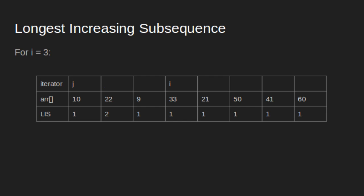For i equal to 3, is 33 greater than 10? Yes. So LIS of i becomes LIS of j plus 1, that is 1 plus 1 equal to 2. Is 33 greater than 22? Yes. So LIS of i becomes LIS of j plus 1, that is 2 plus 1 equal to 3. Is 33 greater than 9? Yes. So LIS of i becomes LIS of j plus 1, that is 1 plus 1 equal to 2. Maximum of 2 and 3 is 3, so we do not change the value.